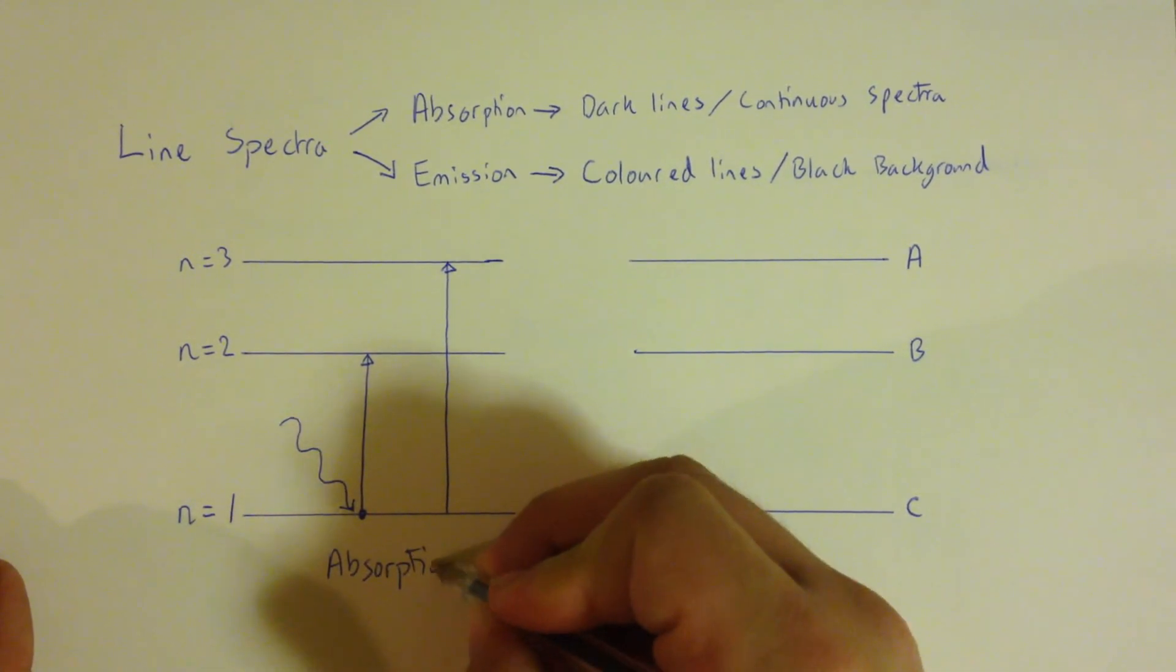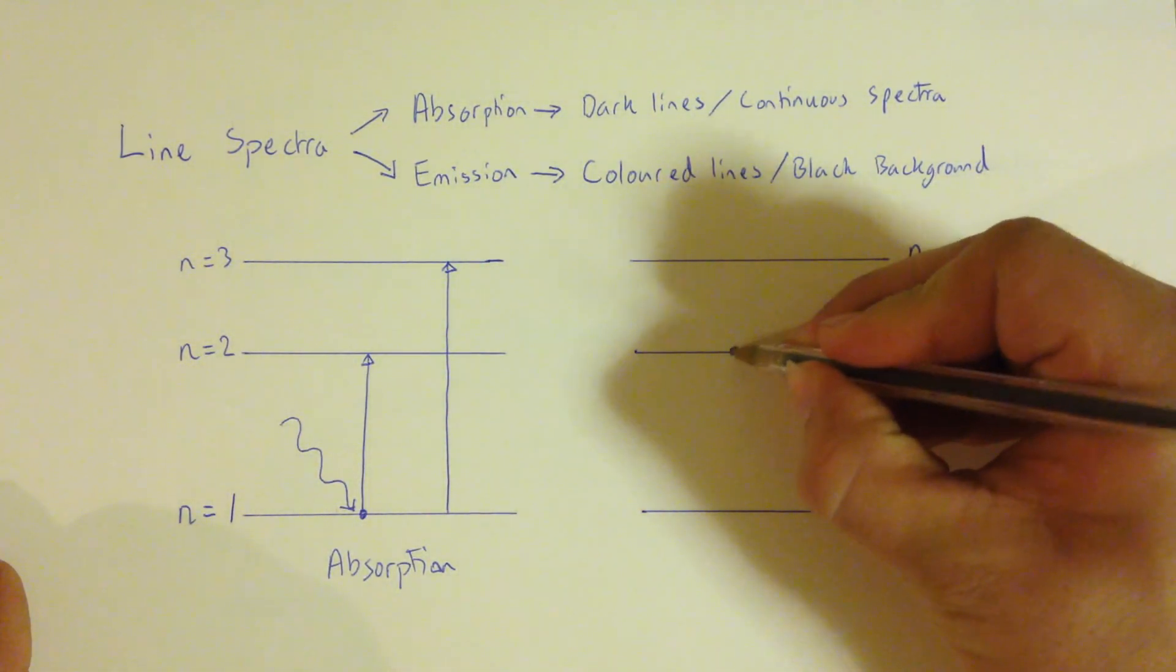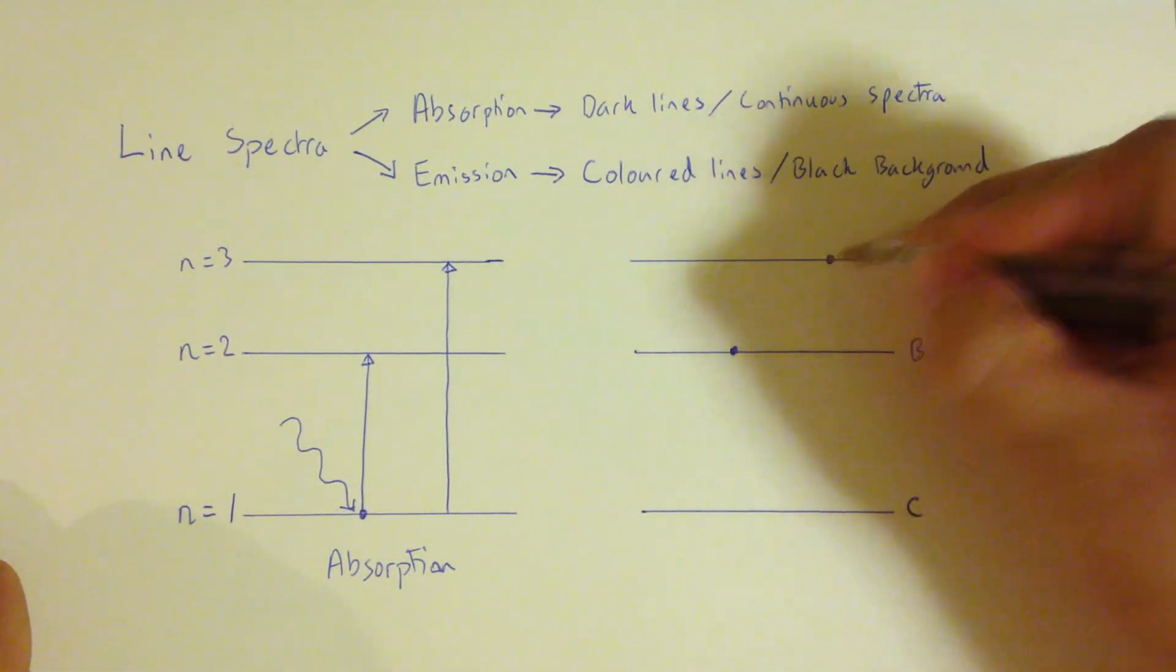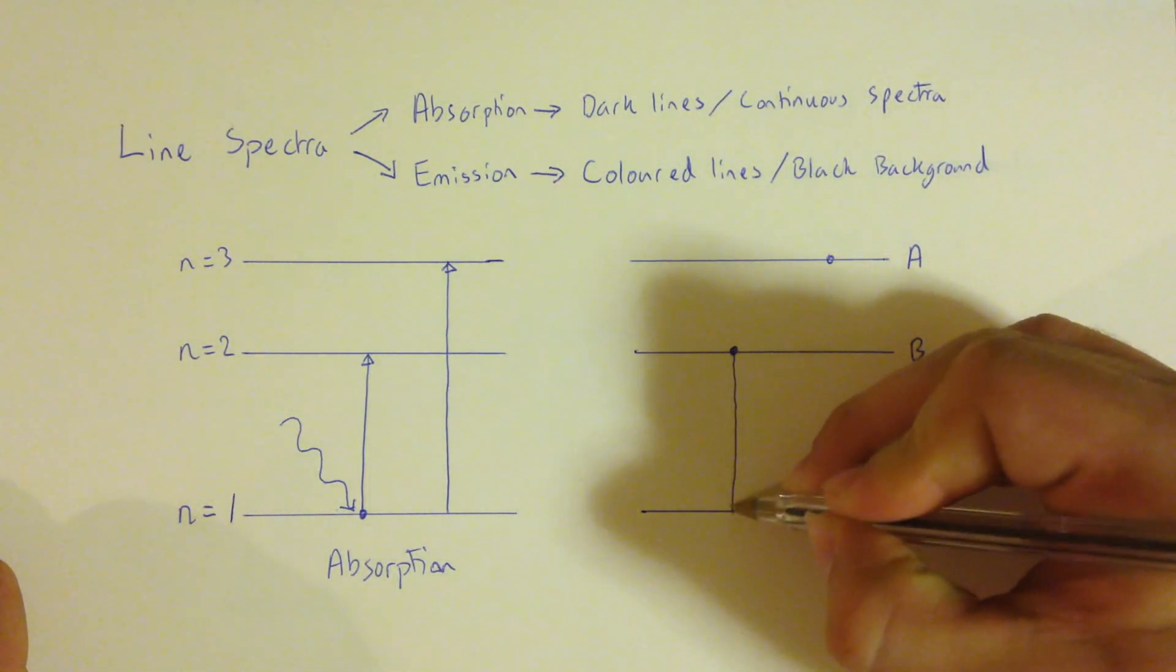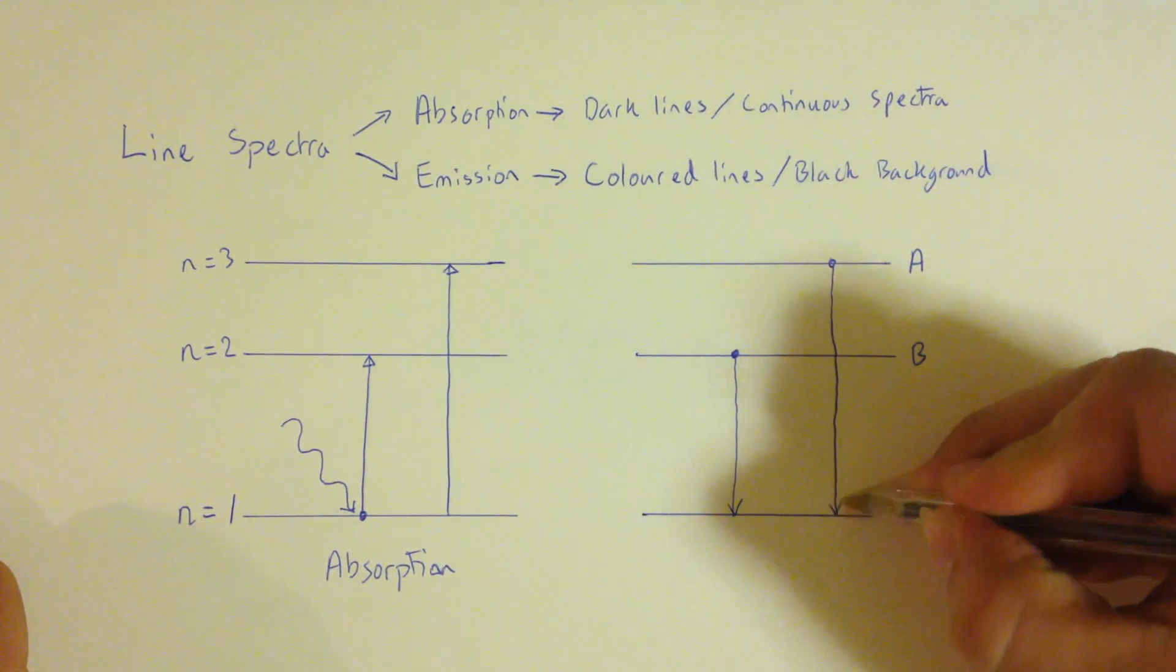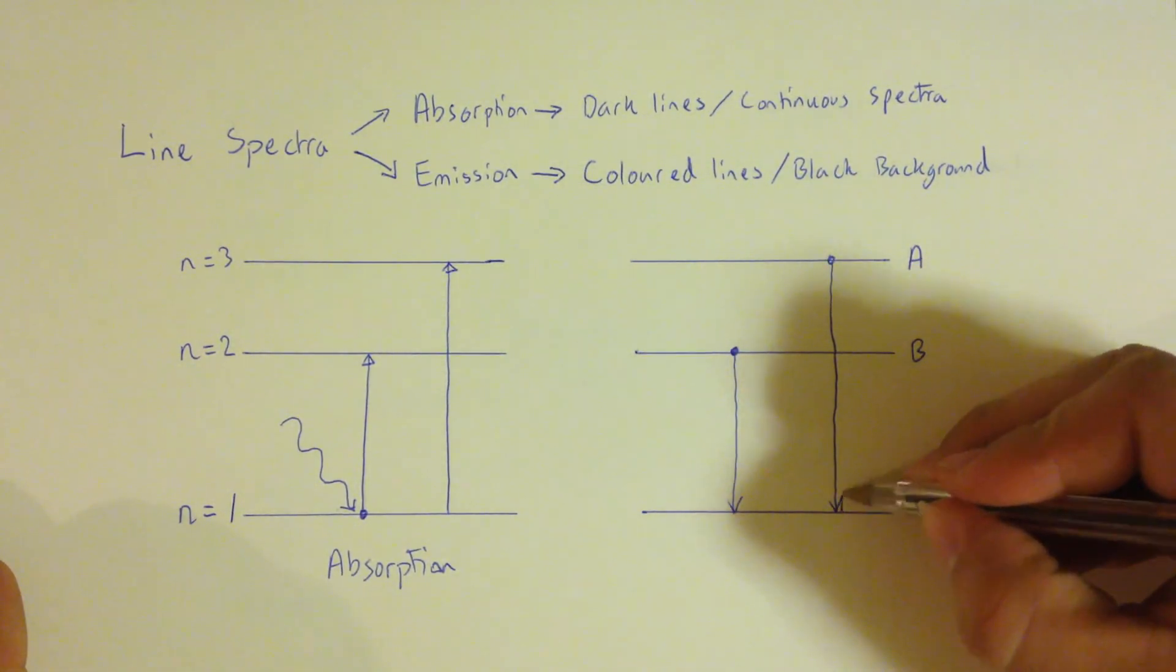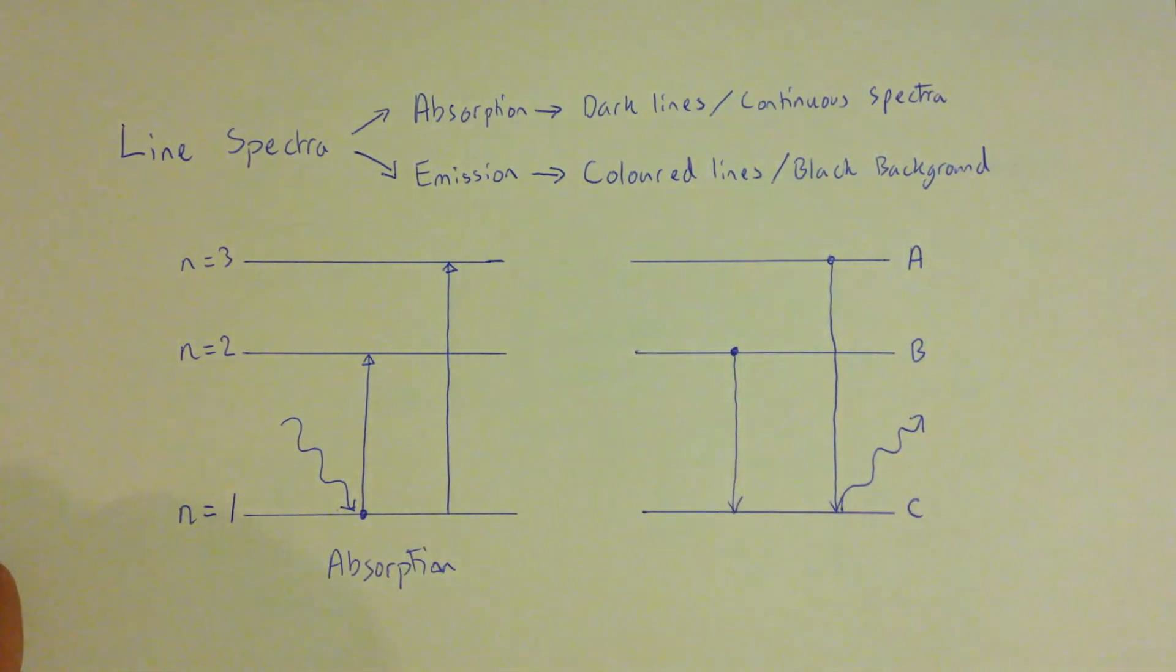Now, with emission, it's different. Basically, where we are now is we have an electron that, for whatever reason, is in an excited state, and therefore, as it drops back down to a lower energy level, then it's that process of dropping back down that then emits a photon, which we then see as our coloured lines on our black background.